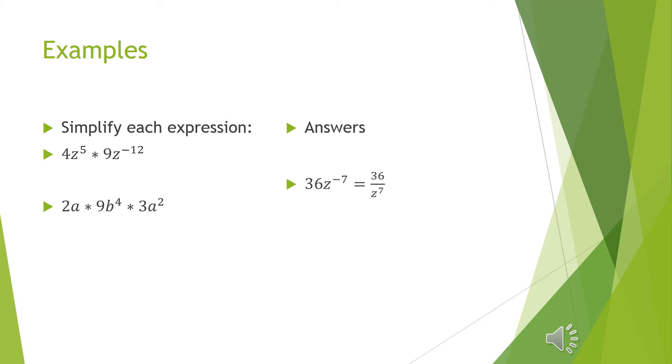For the second one, 2 times 9 times 3 gives me 54. A times a squared is a to the 3rd. And there is no other b term, so b to the 4th stays just as is.